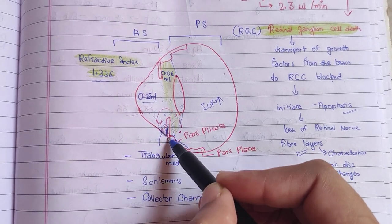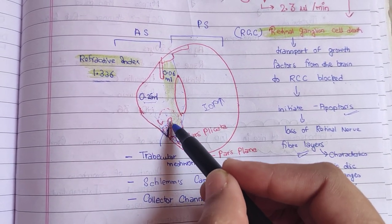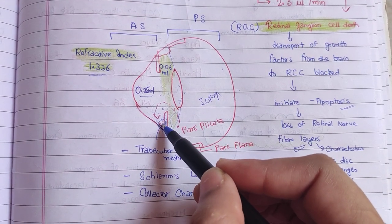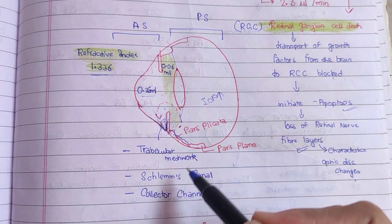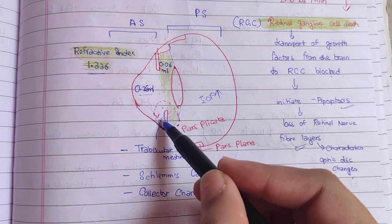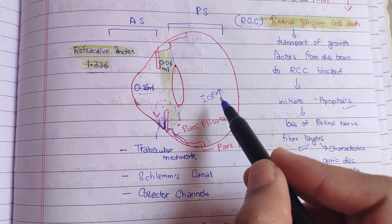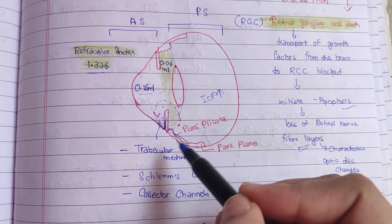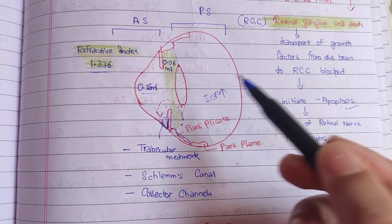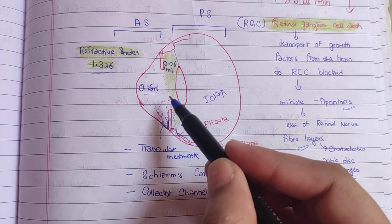The iridocorneal angle — where iris and cornea meet — contains the trabecular meshwork, the canal of Schlemm, and collector channels, which drain the aqueous and thereby maintain IOP. In glaucoma, certain circumstances arise where this drainage does not occur properly.